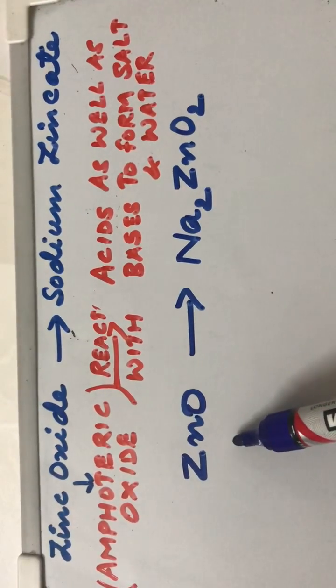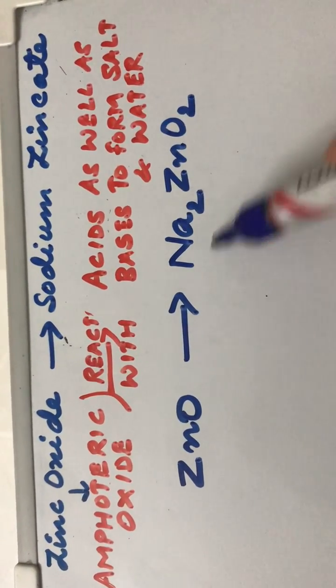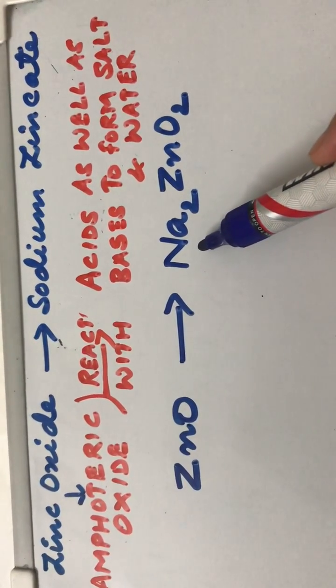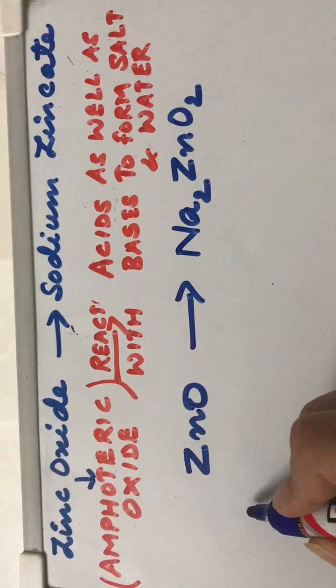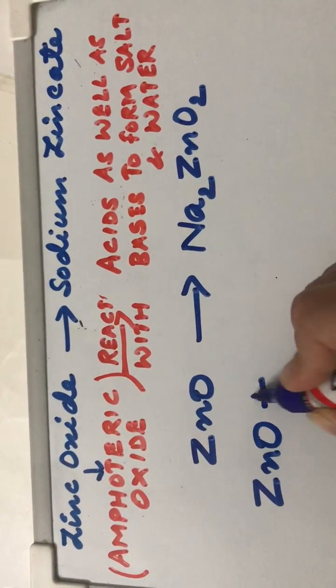Now this is clearly telling us that on the product side, we need a compound which is actually a complex salt having sodium ion in it. Now that can only be possible if we react zinc oxide with some compound of sodium.